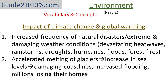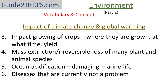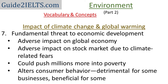Millions are losing their homes because of rising sea levels. The change in temperature and rainfall impacts the growing of crops. There is mass extinction and irreversible loss of plant and animal species if climate change is not controlled. Increased carbon dioxide in oceans — known as ocean acidification — is impacting marine life. As a result of climate change, it is expected that there will be diseases in future that are currently not a problem. Climate change is also a fundamental threat to economic development.